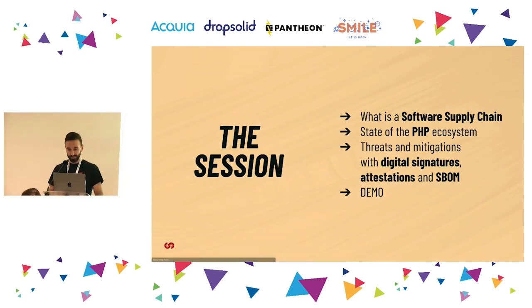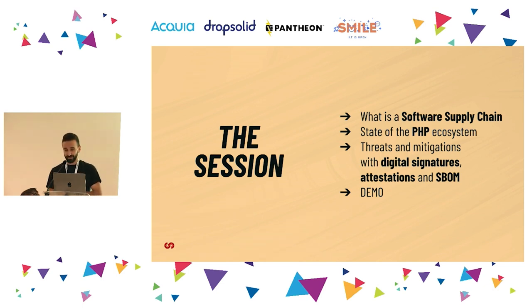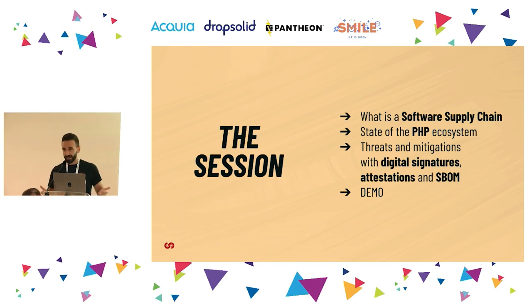Let's get started. In this session I will start by explaining what is the software supply chain and why it's so important today. Then we will see the state of the PHP ecosystem, threats, and mitigations we can put in place with digital signatures, software attestations, and SBOM — software bill of materials. Finally, I will do a demo to let you see how these tools work in a real-life scenario.